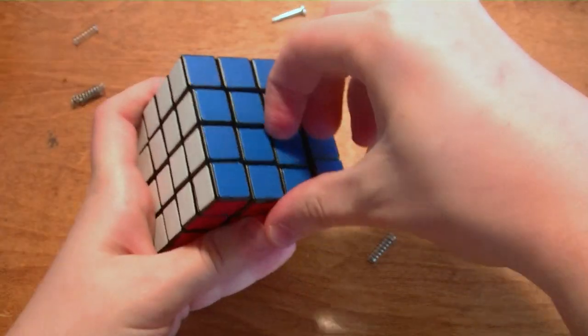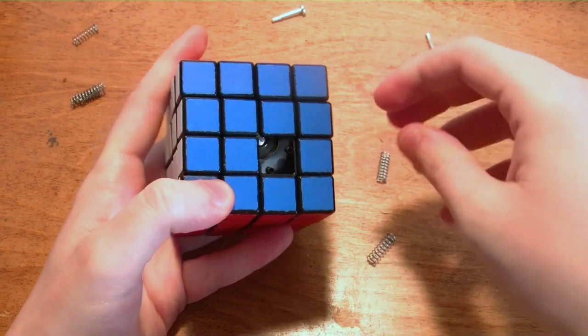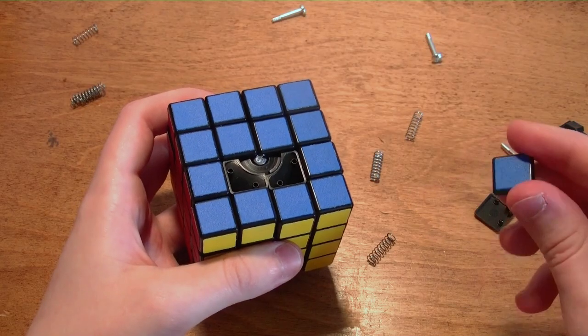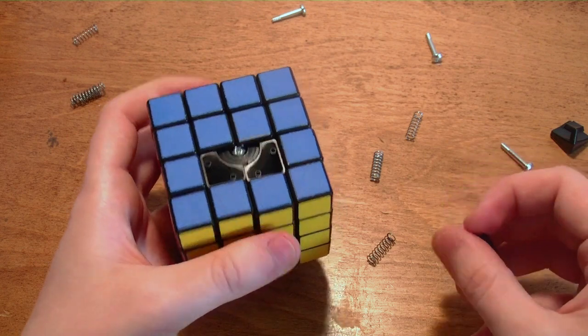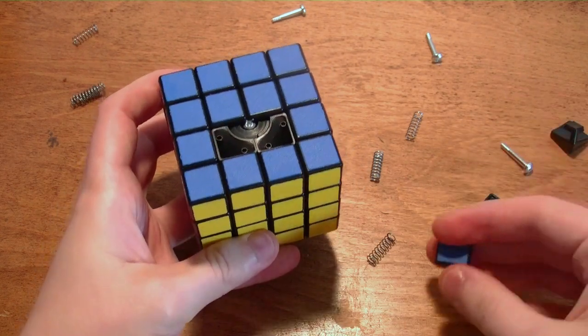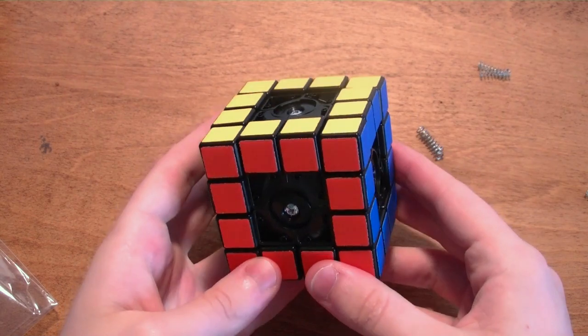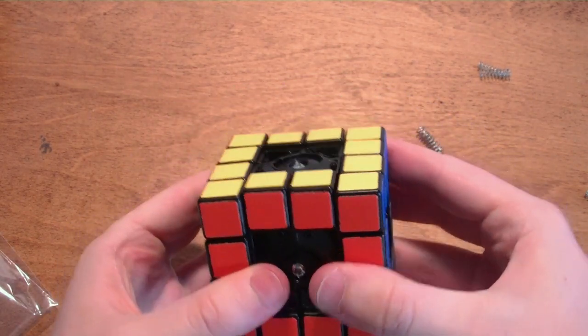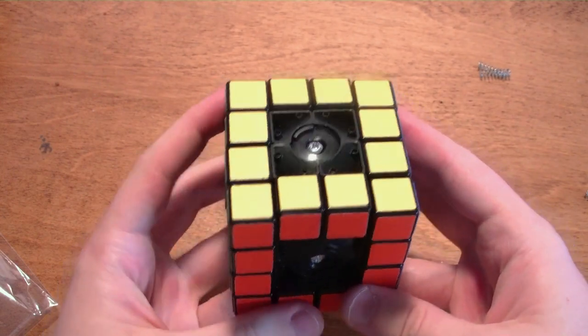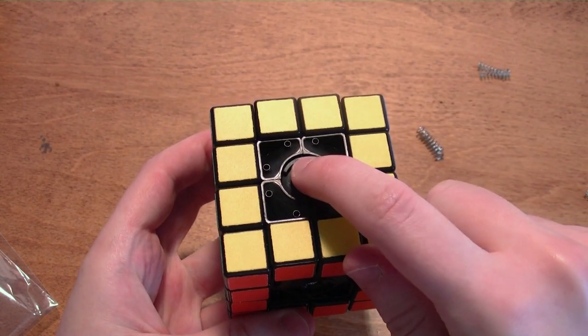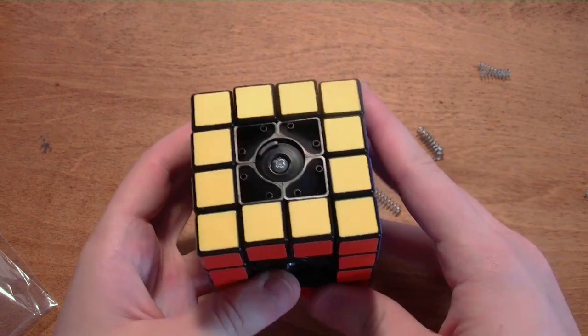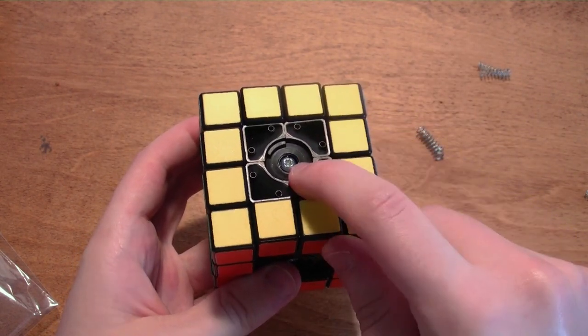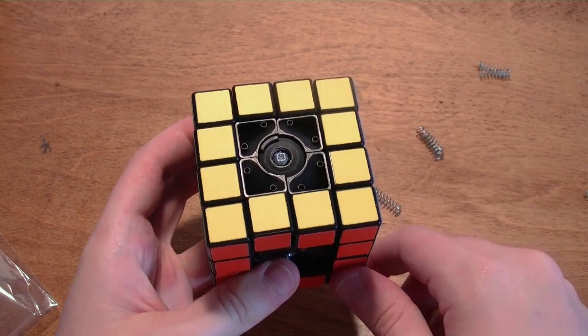But fortunately with the DIY version, I can just pop off the center caps and I can easily replace them with the screws. And it's going to be interesting to see if these center caps stay on or not, because it'll be a bit of a pain to have to take it apart and re-glue them on. But one thing that I noticed after I tensioned it was that one layer wouldn't move at all. After closer inspection, I realized that the bump here on the yellow side was facing the wrong direction.